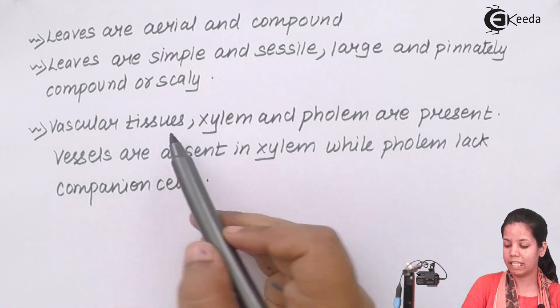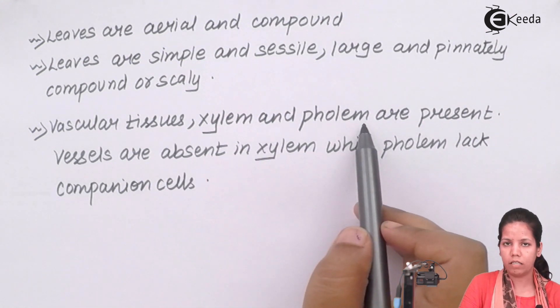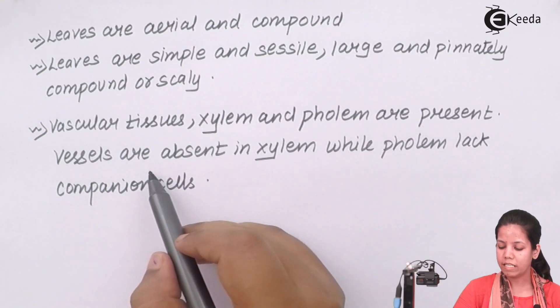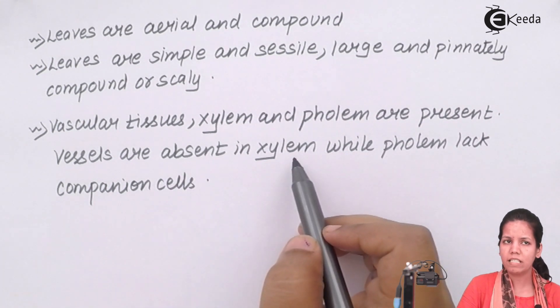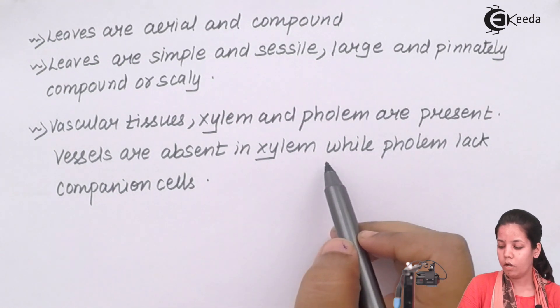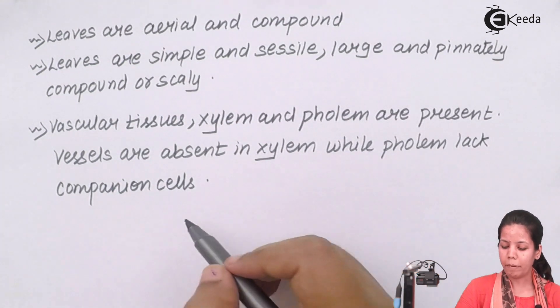Also vascular tissue which is xylem and phloem are present in pteridophyte though they are vascular or primitive plants, whereas vessels are absent in the xylem.